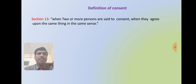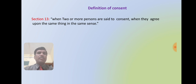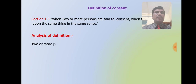Consent is defined under Section 13 of the Indian Contract Act, 1872. Two or more persons are said to consent when they agree upon the same thing in the same sense. This is very important from a contract perspective — the persons entering into the contract must agree, meaning there should be no difference in the understanding of the parties. Whatever one party wants to convey, the same shall be accepted by the other party; if not, it is not a valid contract.